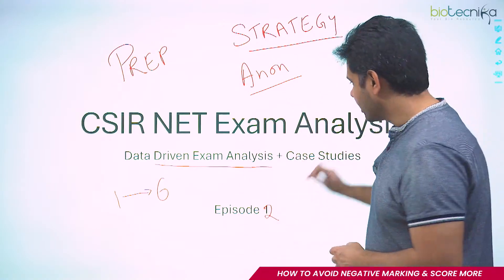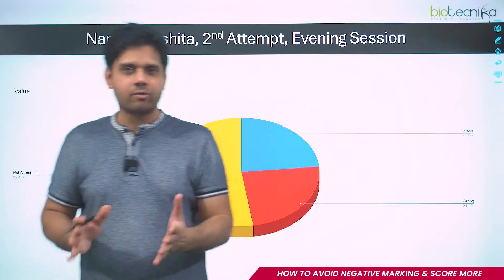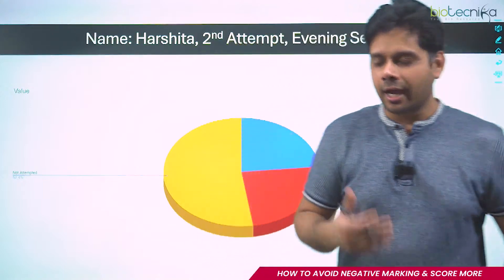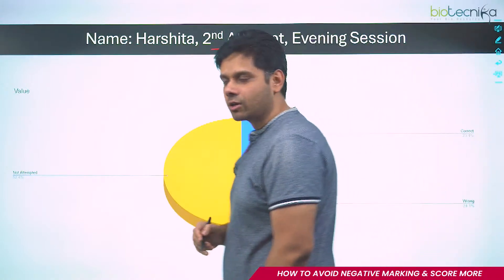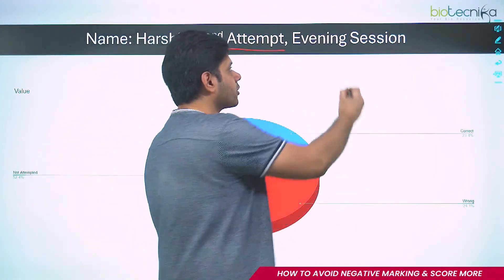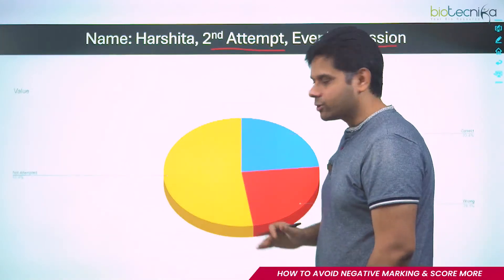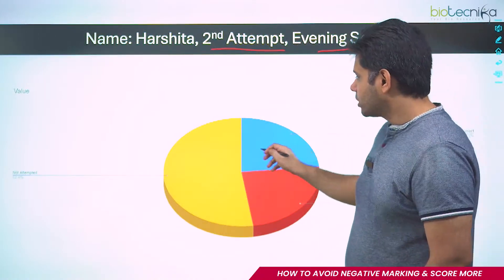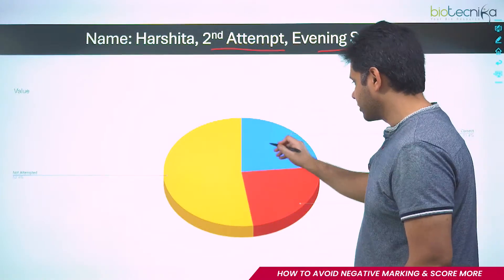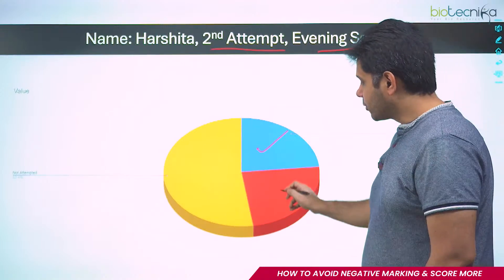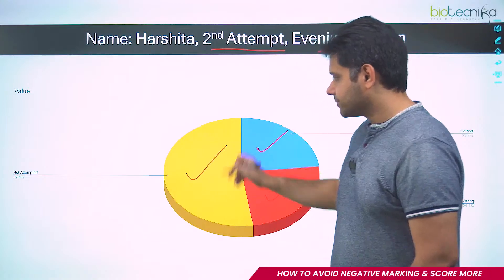Let's look at Harshita — a subscriber of Biotechnica, not a student. This was her second attempt, in the evening slot of CSIR NET December 2023. The pie chart shows: blue is the number of correct questions, red is the number of wrong questions, and yellow is the number of questions not attempted.